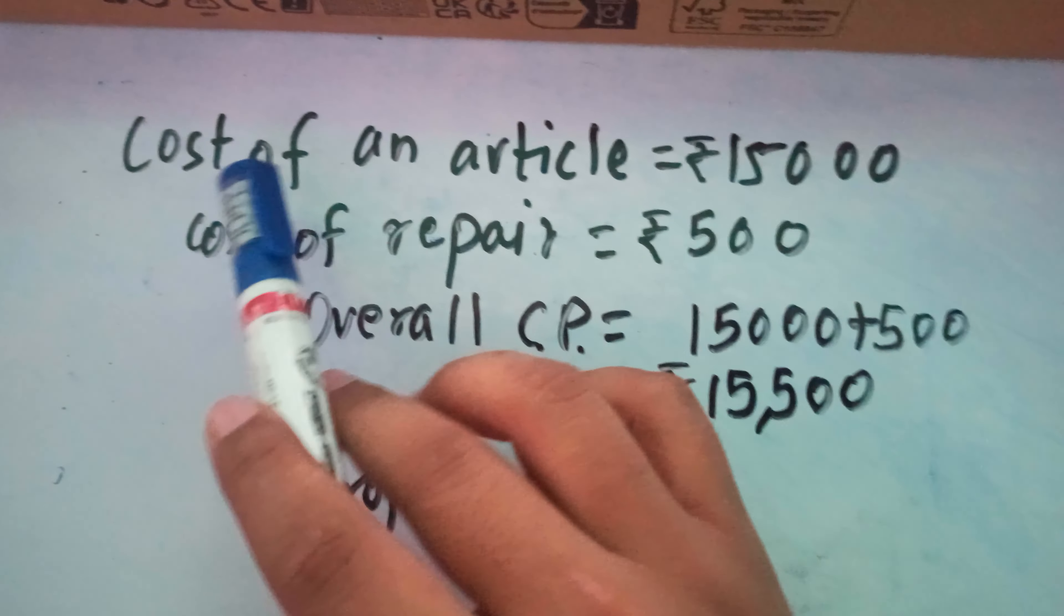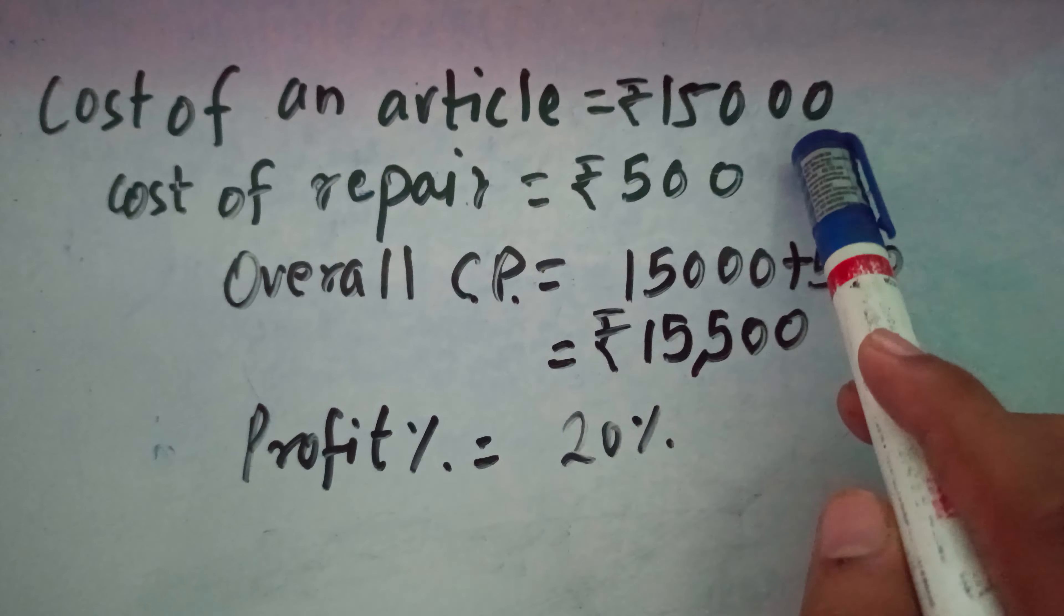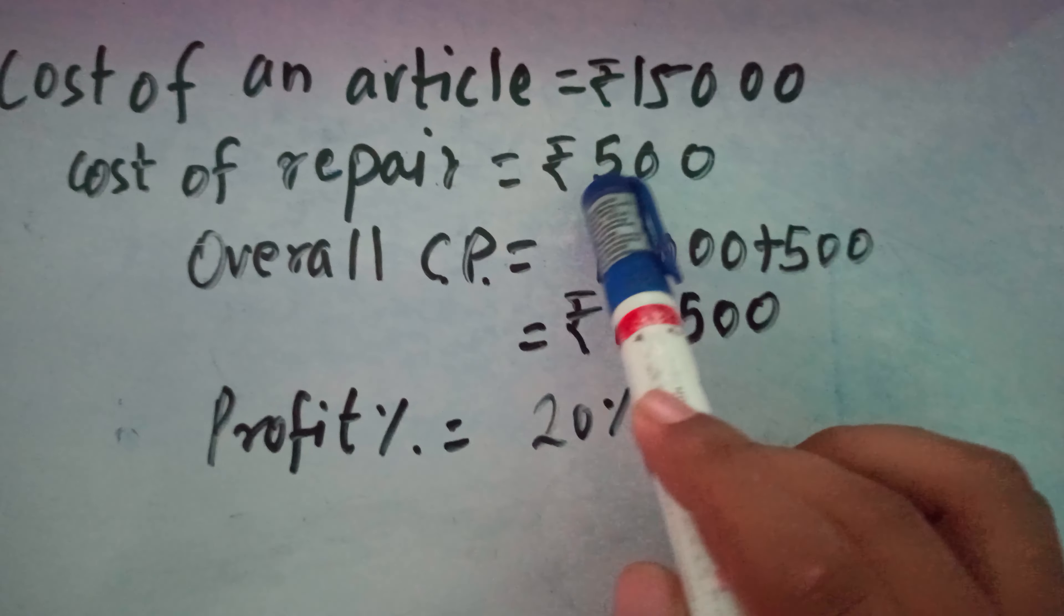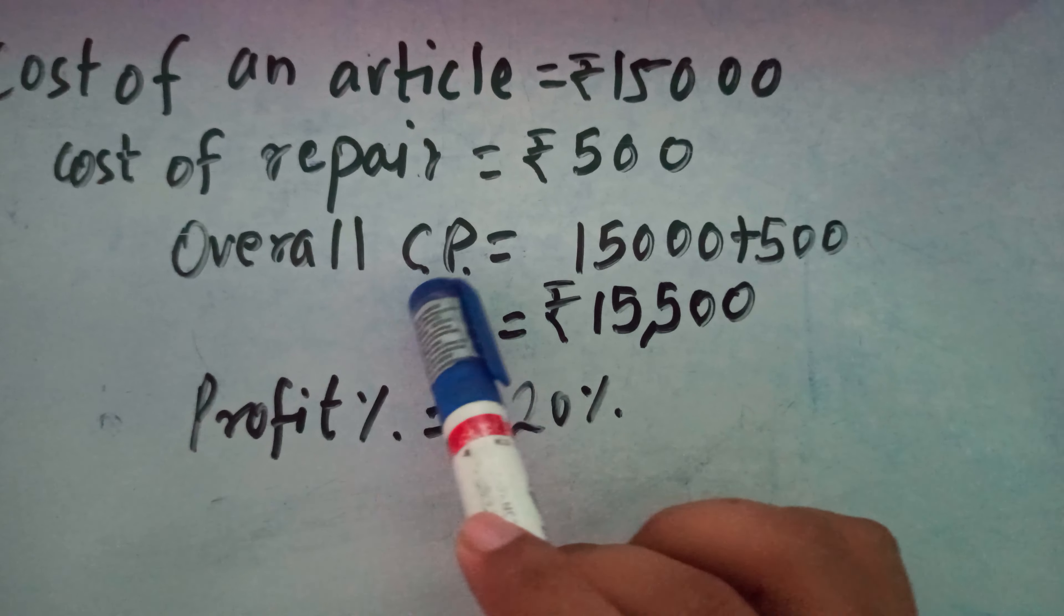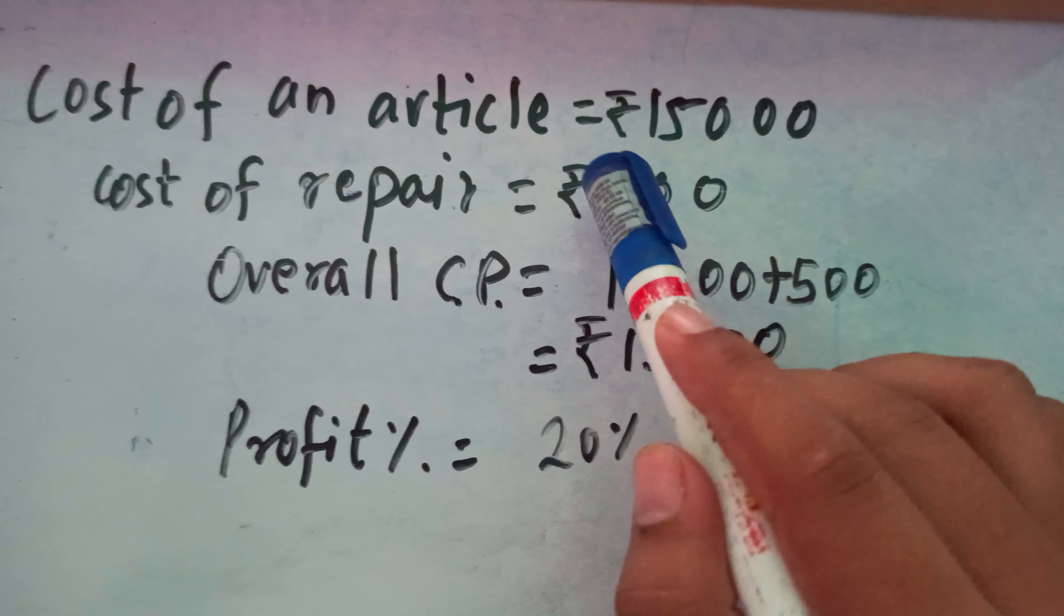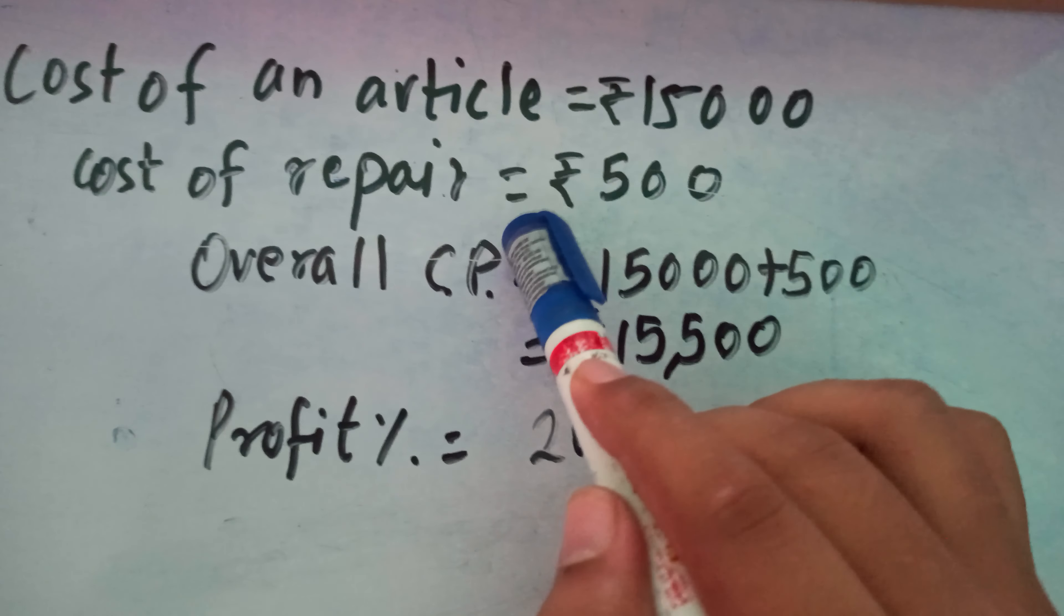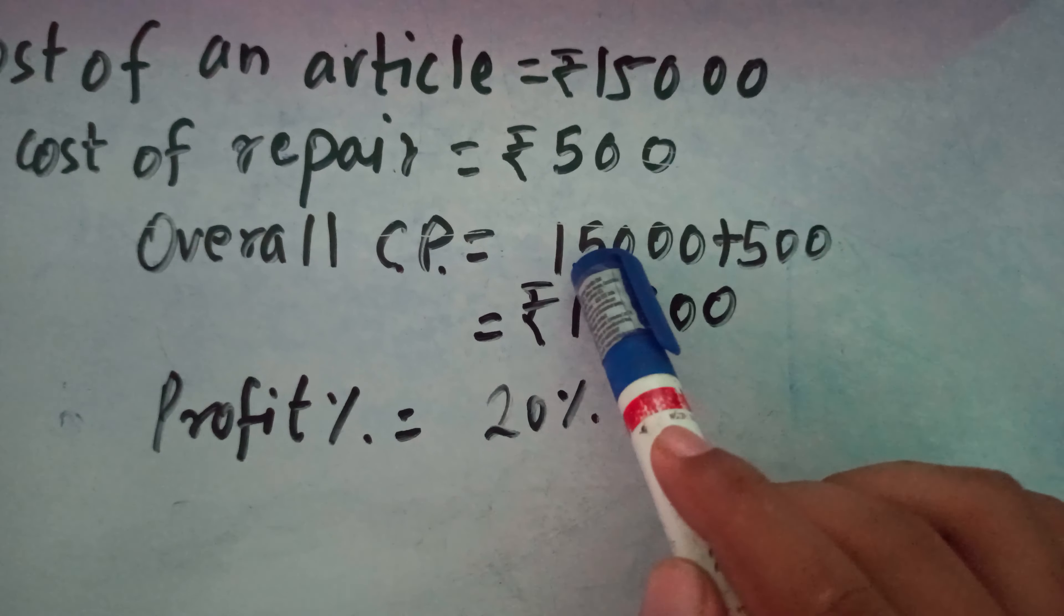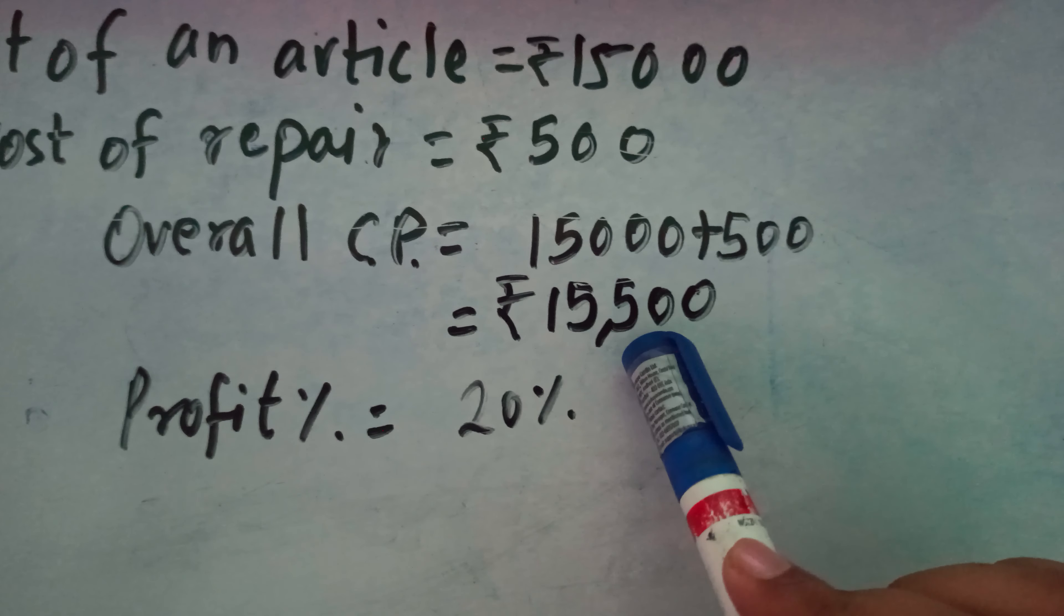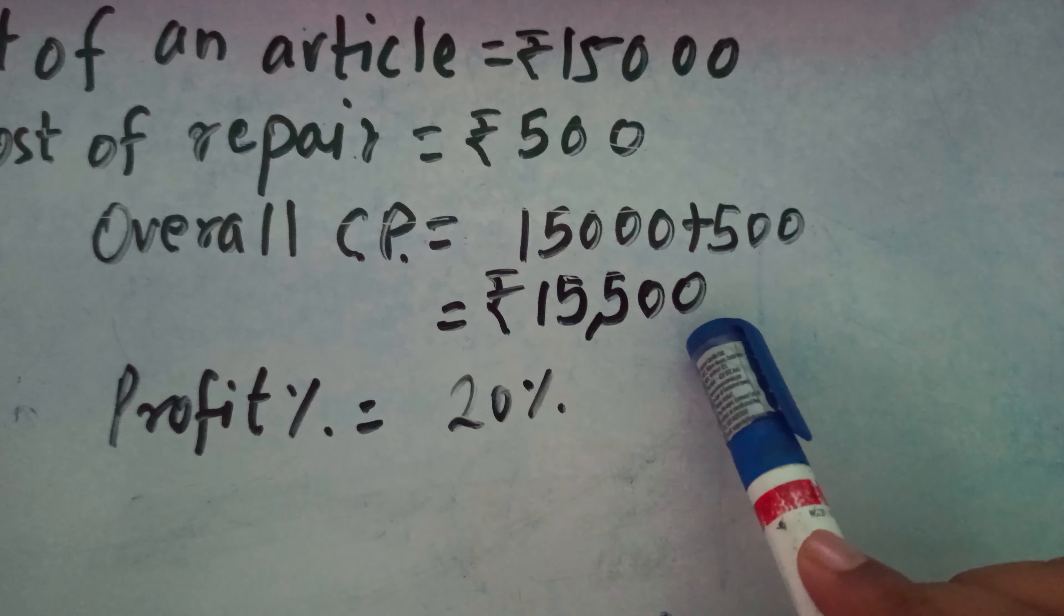In the question we are given that cost of an article is ₹15,000, cost of repair is ₹500. The overall CP - that is, the overall cost price - is the cost of article plus cost of repair, which is 15,000 plus 500, which equals ₹15,500.